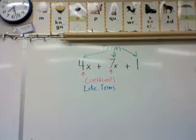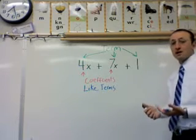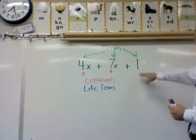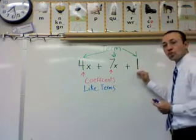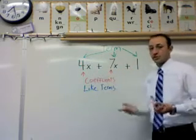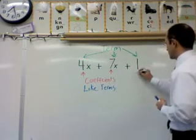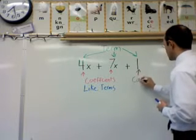Now, finally, we have one number left over, that was our one. And our one gets identified with a special term too. We call this a constant term. A constant term is a number inside of an expression that does not have a variable next to it.